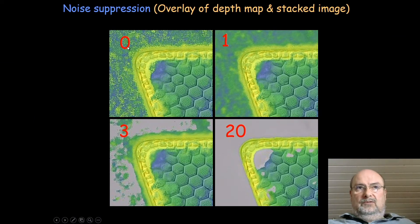The first is the noise suppression. We have it at 0. What we see here is the overlay of the depth map which goes from blue over green to yellow. Blue is in the back, green in the middle, yellow is on top. It's overlaying with the stacked image and you can see what you have at different positions. It's very helpful to judge your result.